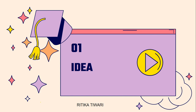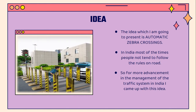The first topic we are going to cover is the idea of the Automatic Zebra Crossing. The idea I am going to present is Automatic Zebra Crossings. In India, most of the times people do not tend to follow the rules on road, which afterwards causes dreadful accidents. So for more advancement in the management of the traffic system in India, I came up with this idea.